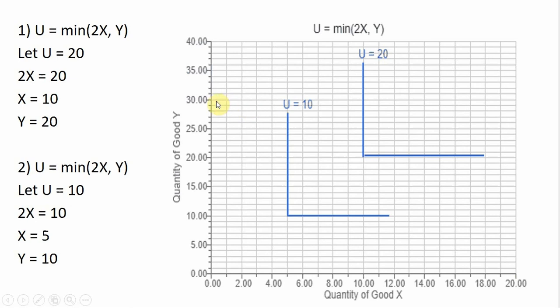Now, for example, if y equaled 30, right here, and x equals 10, if we were to plug y equals 30 and x equals 10 into this utility function, what would you get? It would be the minimum of 2 times 10 or 20, y equals 30, so the minimum of 20 and 30 is just 20.